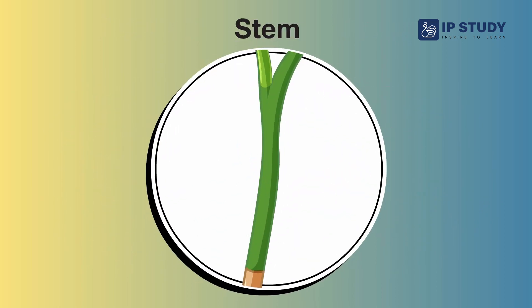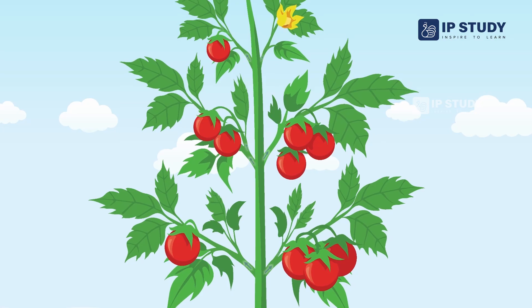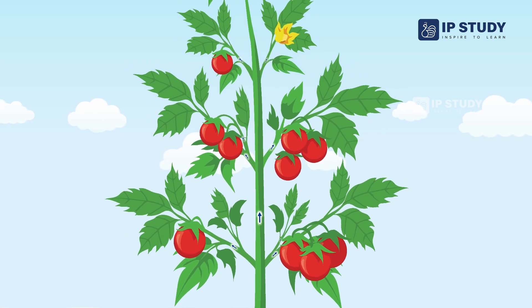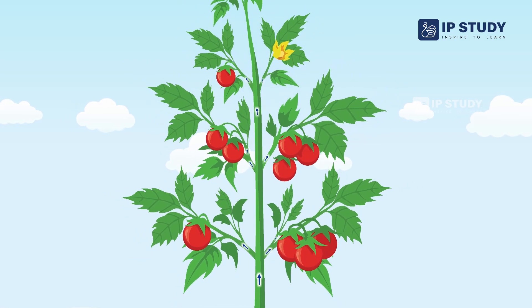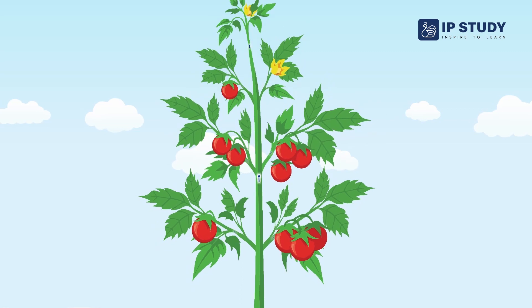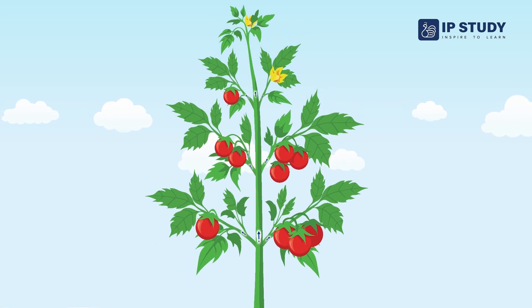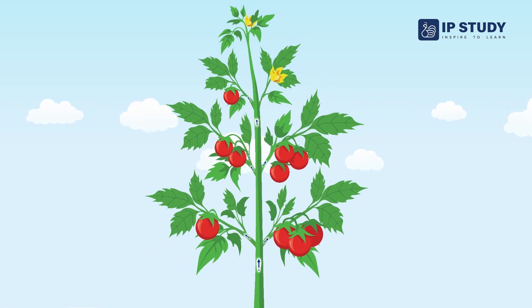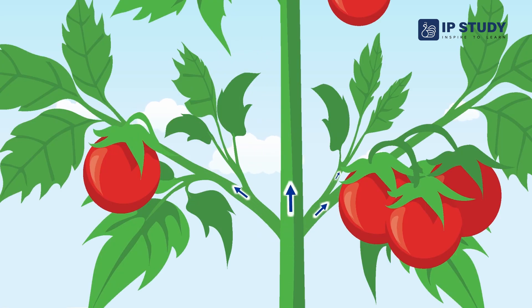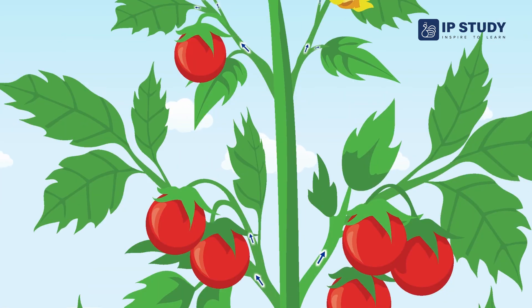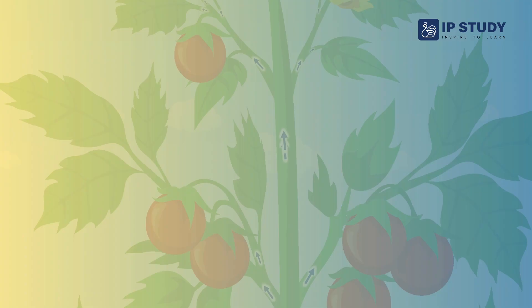Stem. The stem is strong and helps hold the plant up and lets water and nutrients flow up to the leaves. Some stems we eat are celery and sugar cane.